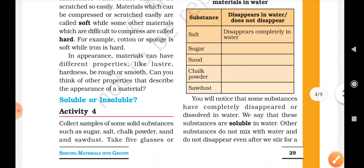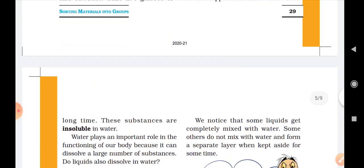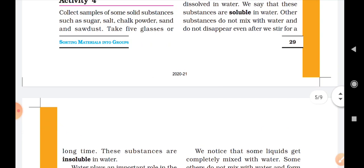You will notice that some substances have completely disappeared or dissolved in water. We say that those substances are soluble in water. Other substances do not mix with water and do not disappear even after we stir for a long time. These substances are insoluble in water.